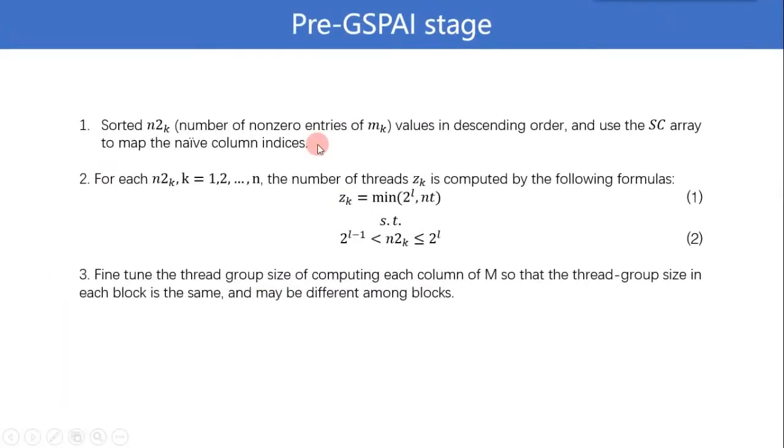First, we sorted the number of non-zero entries of M key values in descending order and used the SC array to map the new column indices. Then, for each n2_k, the number of threads z_k is computed by the following formulas. And then, z_k threads are grouped into a thread group, which is assigned to compute the kth column of M.